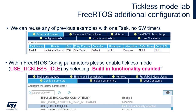We can reuse any of the previous FreeRTOS examples or create a new one for the selected MCU. We will start with FreeRTOS configuration. For this exercise we would need only one single task with priority set to OSPriorityNormal, stack size 256, and entry function startTask1. Within FreeRTOS config parameters, please enable 'use tickless idle' by selecting built-in functionality enabled.